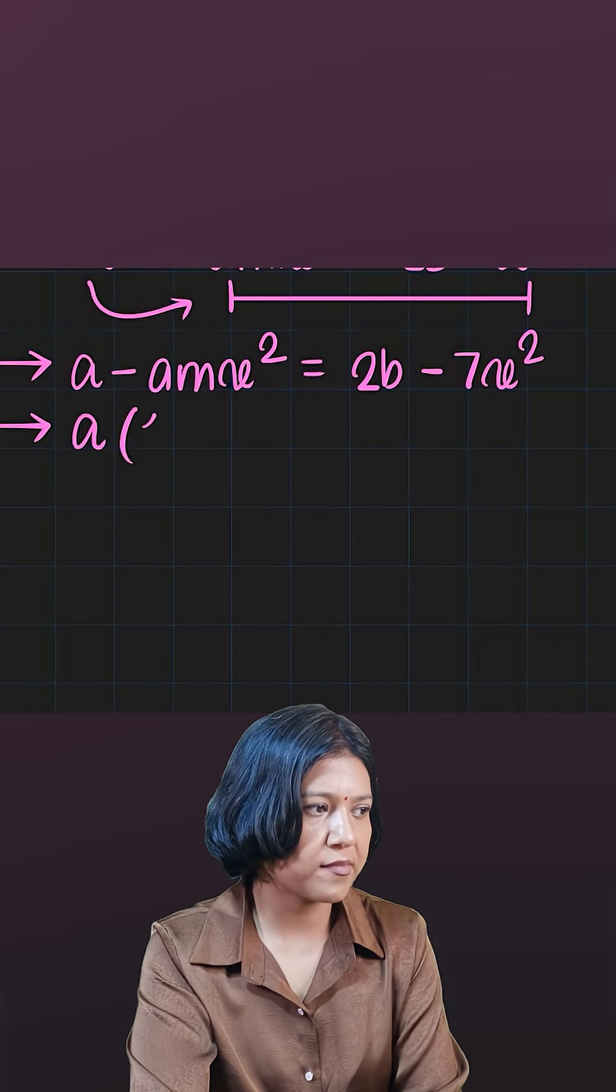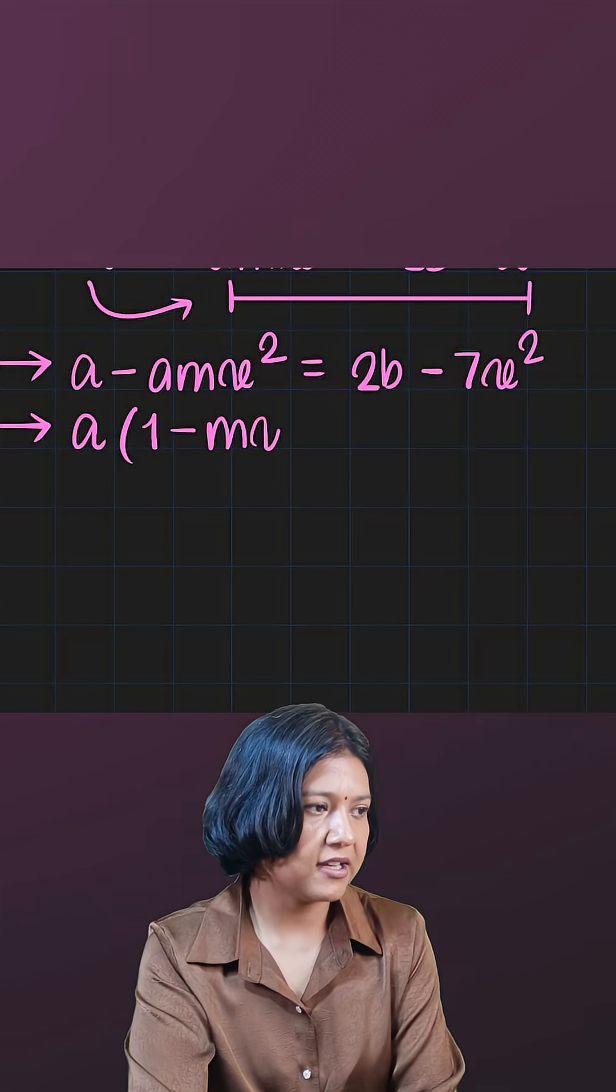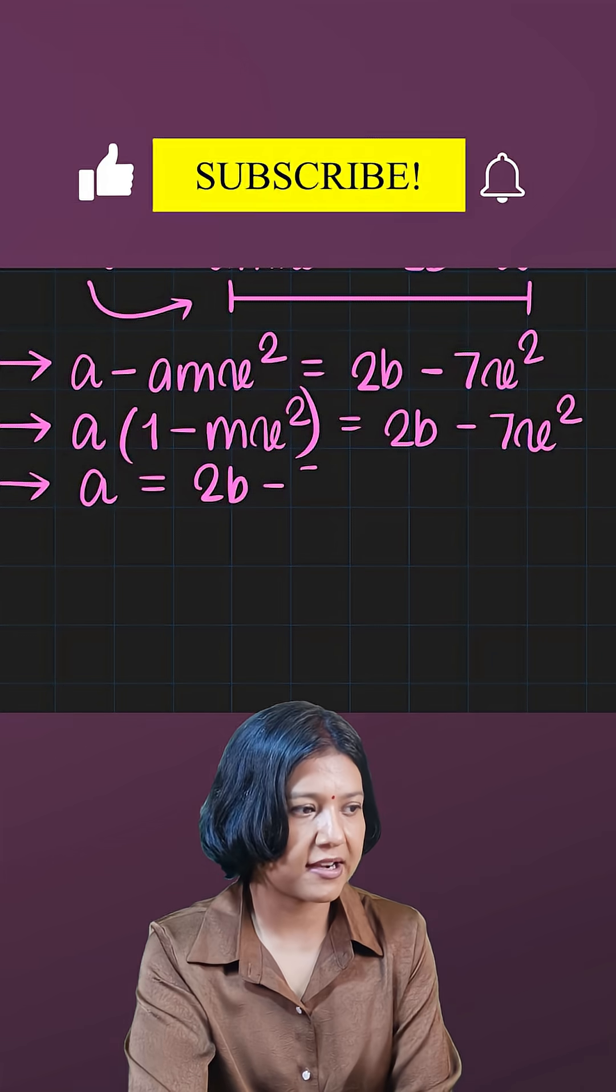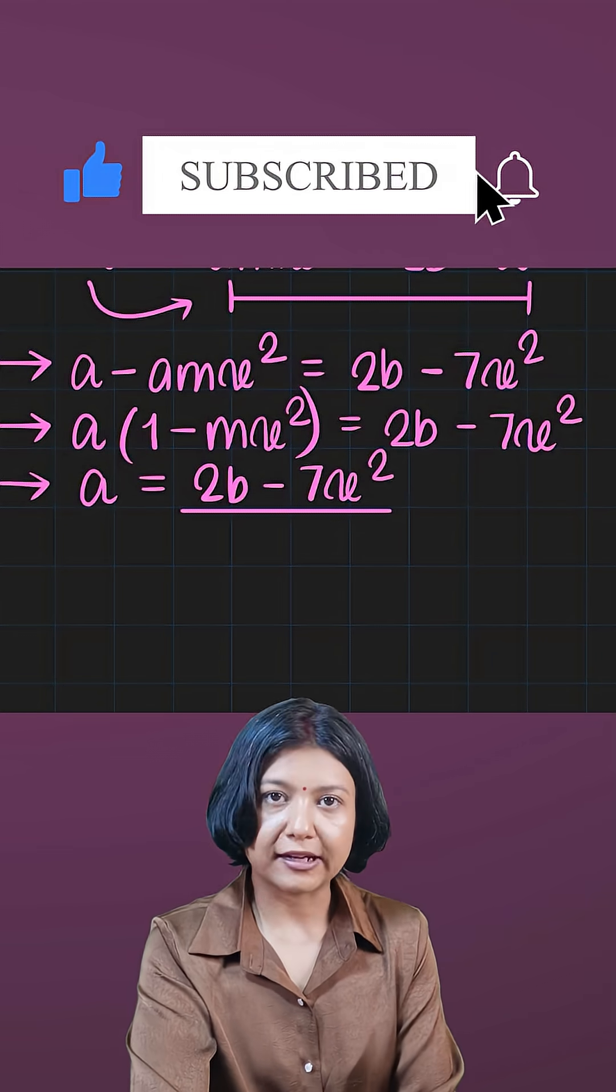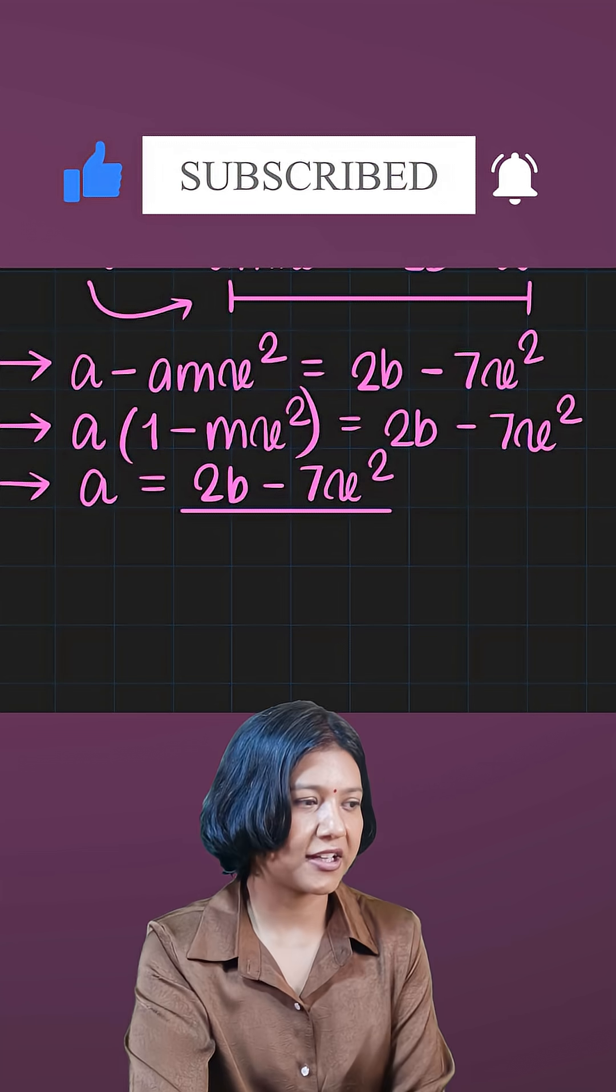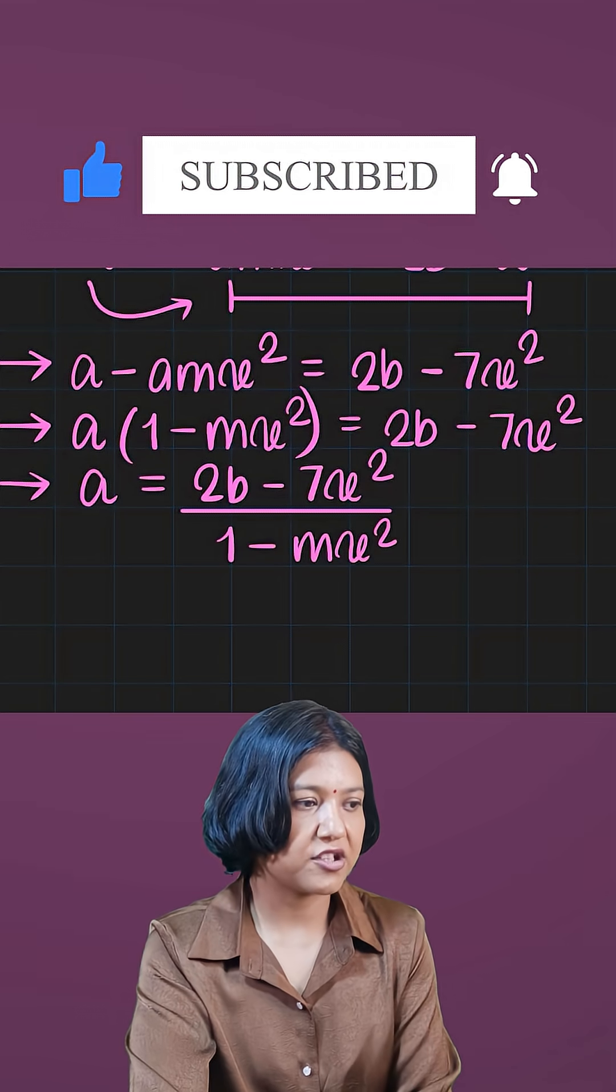A is a common factor to both terms. A into 1 is a, a into mx squared is amx squared. This equals 2b minus 7x squared. What you're doing now is taking this bracket - the whole thing is multiplying with a. So you want to take it to the other side or write it in division form.